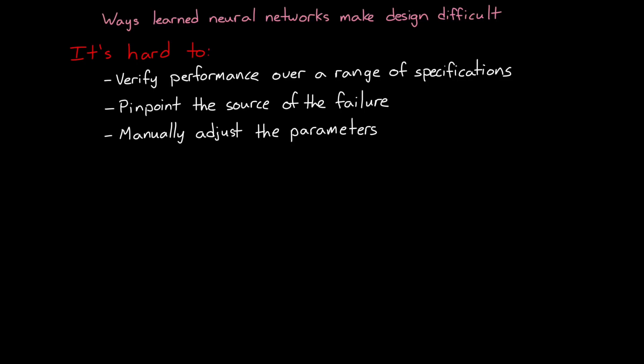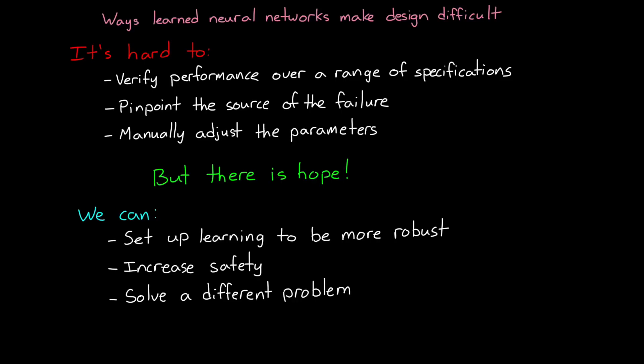But I don't want to destroy your confidence in reinforcement learning as a useful tool for production systems. Because with all of that being said, there are ways to set up learning so that the resulting policy is more robust in the presence of uncertainties. There are also ways to increase safety and make reinforcement learning a viable option for production systems. And we can even use reinforcement learning to solve a slightly different problem, one that avoids a lot of these issues in the first place.